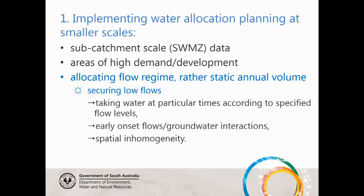We're going to sub-catchment scale rules and management interventions at the surface water management scale. We identify areas of high demand or development, and most significantly, we're trying to allocate the flow regime rather than a static annual volume. That's what we call the securing low flows initiative, whereby low flows are passed down to downstream users including the environment, and the larger flows are trapped for development.